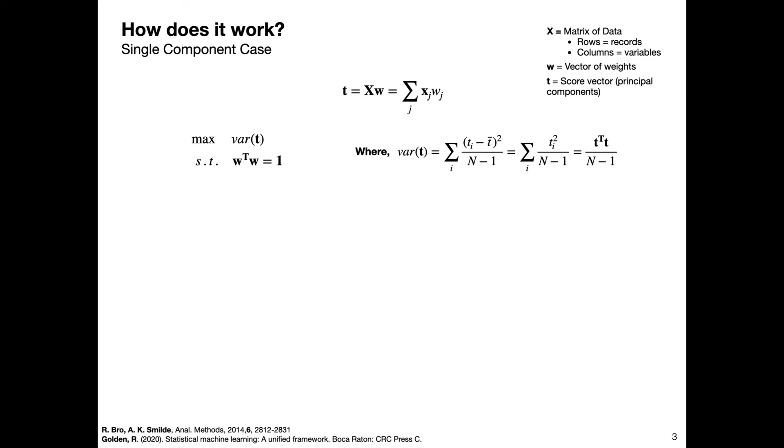Variance is defined in the usual way: you take every element, subtract the mean of the variable, square it, divide by the number of elements minus one, and add this up for every single element. One really important thing when doing PCA is you want to auto-scale your data.